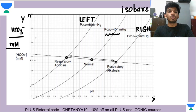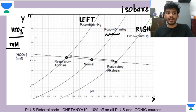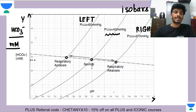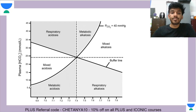The normal bicarbonate level is somewhere around 22 to 28 millimolars — it depends slightly on age and whether you're male or female. I'm not focusing too much on the exact values; I'm focusing on the concept. Let's build this slightly more and talk about acidosis and alkalosis. This single isobar at the normal values is going to be our reference.